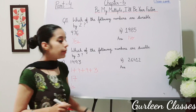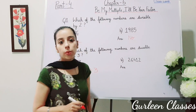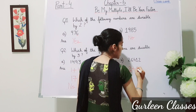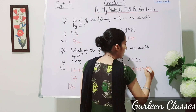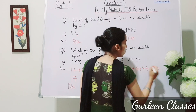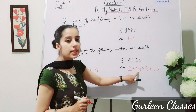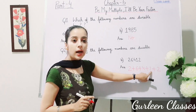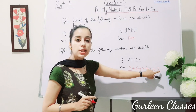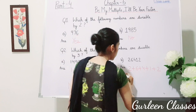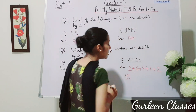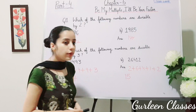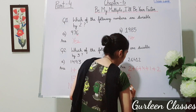Part B: 26412. The sum of its digits: 2 plus 6 plus 4 plus 1 plus 2 equals 15. Is 15 divisible by 3? Yes — 3 fives are 15. So yes, 26412 is divisible by 3.